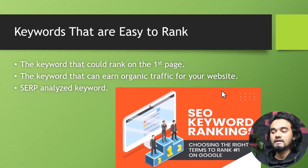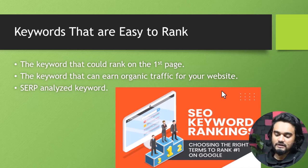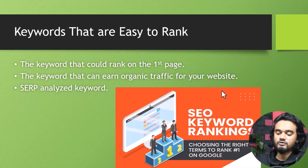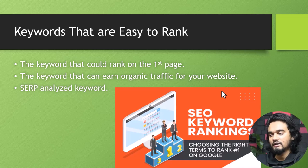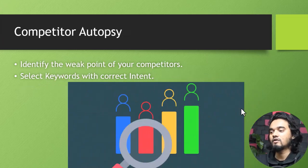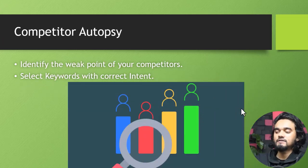Number five: keywords that are easy to rank. The keyword should appear on the first page of where you are searching — whether that's Google or Bing. The keyword should be able to earn organic traffic for your website, meaning it should be searched by real people around the world.